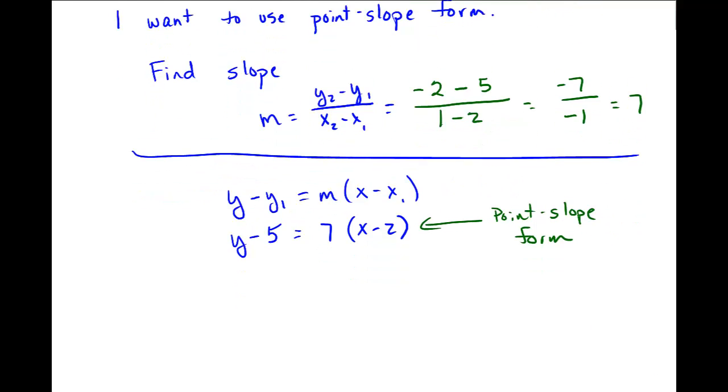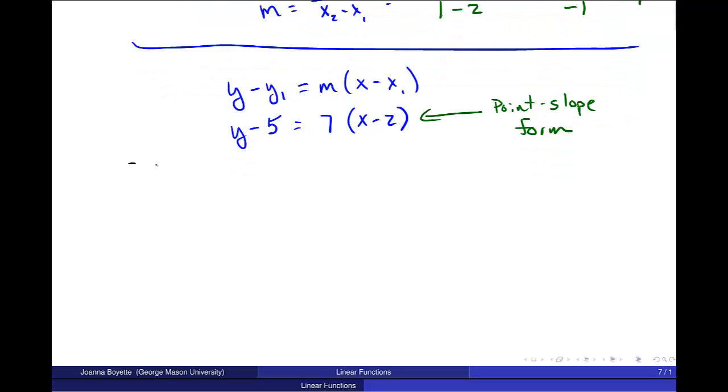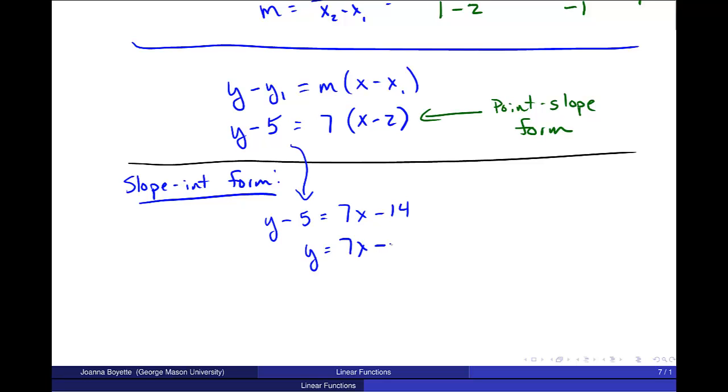Now, you can go from this equation or from this form of the line to some of the other forms. Let's go to slope-intercept form. In slope-intercept form, I just need to solve for y. So I get y minus 5, and I will multiply this 7 out, 7x minus 14, and then add 5 to both sides. y equals 7x minus 9. And there's my slope-intercept form. To get to general form, I just move both x and y pieces over to the left. So in this case, I'll move the 7x and subtract 7x from both sides: -7x plus y equals -9. And there's my equation in general form.